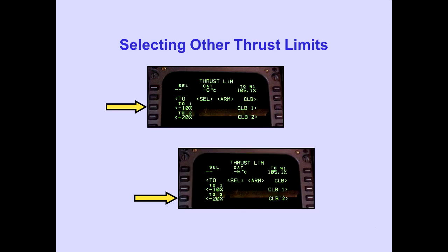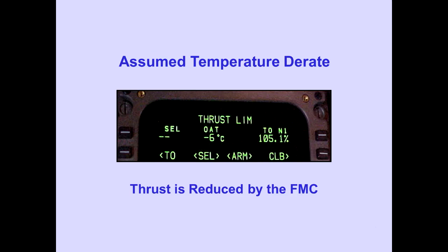If other thrust limits are desired, line selecting takeoff 1 or takeoff 2 selects the respective thrust limit and arms the respective climb thrust limit. The selected thrust limit can be derated by entering an assumed temperature in the select line. "D" is displayed to the left of the selected takeoff thrust limit and thrust is reduced by the FMC. At this time, it is ATLAS policy not to use assumed temperature derate for takeoff performance.